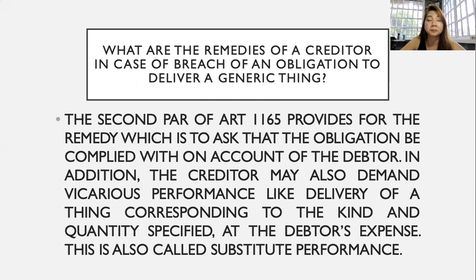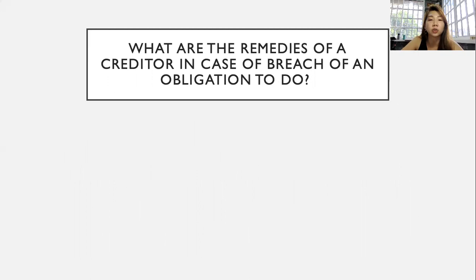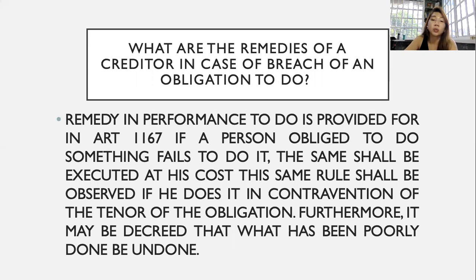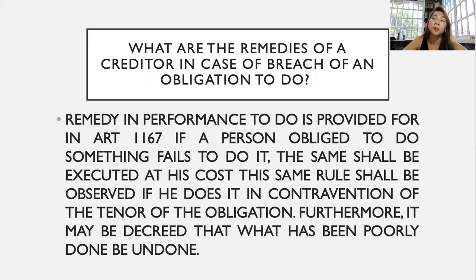What are the remedies of a creditor in case of breach of an obligation to do? The remedy is provided in Article 1167: if a person obliged to do something fails to do it, the same shall be executed at his cost. The same rule applies if he does it in contravention of the tenor of the obligation. Furthermore, it may be decreed that what has been poorly done be undone. Similar to obligations to give, compliance with the obligation is required, at the expense of the debtor. If the debtor fails to comply, the creditor has the right to have the obligation performed by himself or another person — unless personal considerations are involved — at the debtor's expense, and to recover damages.